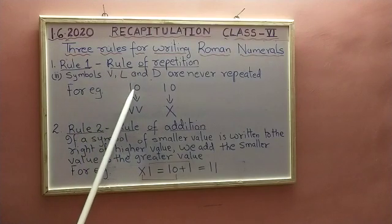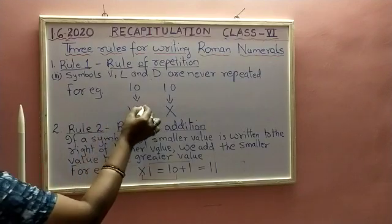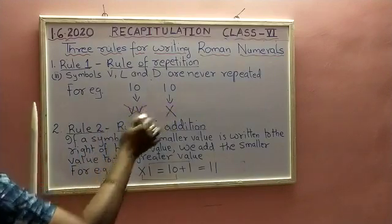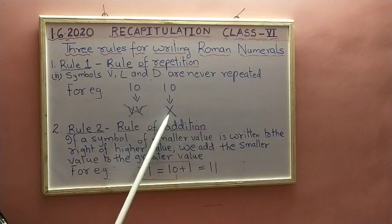For example, 10 cannot be written as VV. Instead of that, it can be written as X, the symbol X.